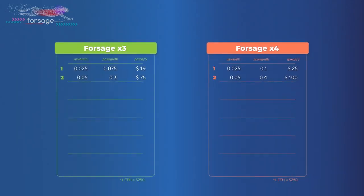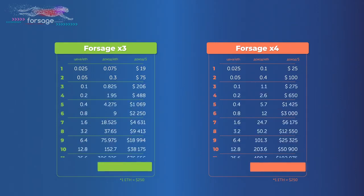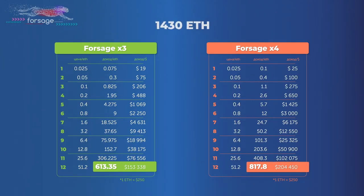If you move this way one slot a week, then in 12 weeks you will go to the 12th slot, and your full income will be 613.35 with X3, and 817.8 ETH with X4. Total 1430 ETH.